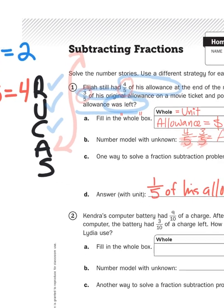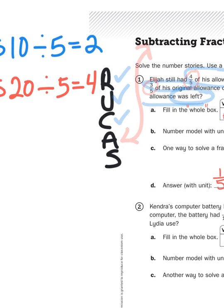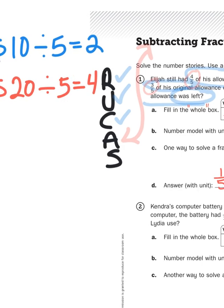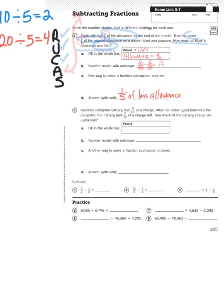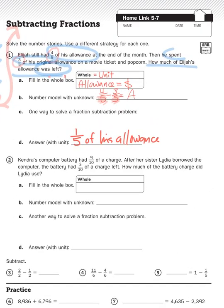So if he still had four-fifths of his allowance left, if he started out with $20, four times four would be $16, and he'd still have $16 in his pocket. But if he started with a $10 allowance, he'd only have $8 in his pocket. But that's besides the point. We now have an answer to my question, four-fifths minus three-fifths equals one-fifth.